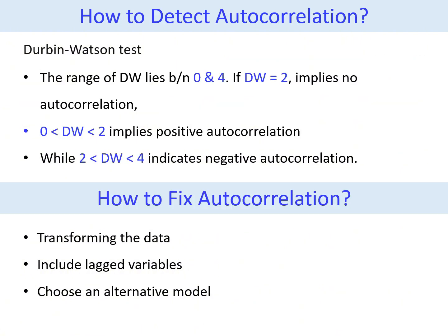To detect the problem of autocorrelation, the commonly used method is the Durbin-Watson test. The Durbin-Watson statistic ranges from 0 to 4. A value of 2 suggests zero autocorrelation, indicating no autocorrelation issue. Values below 2 indicate positive autocorrelation, while values above 2 suggest negative autocorrelation. After identifying the presence of autocorrelation, we have to fix it before further analysis, by transforming the data using log transformation, square root, or inverse, or by including lagged variables.